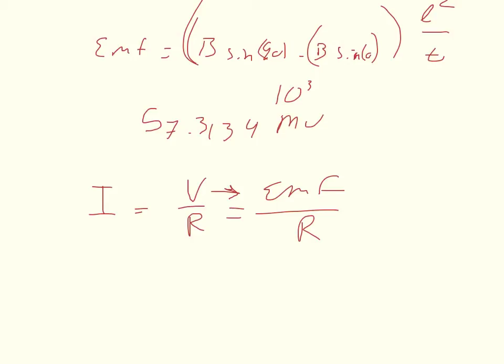And since it wants it in milliamps, you just take the answer that you found for part A, which is already in millivolts. Just divide that by the resistance and the answer will be in milliamps. You don't have to do any more conversions. So I got 73.478 milliamps.